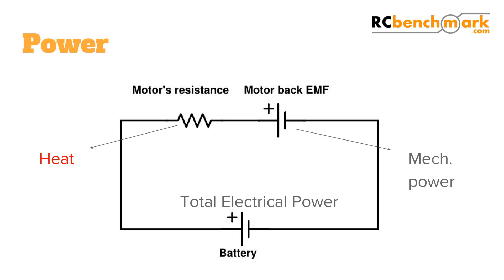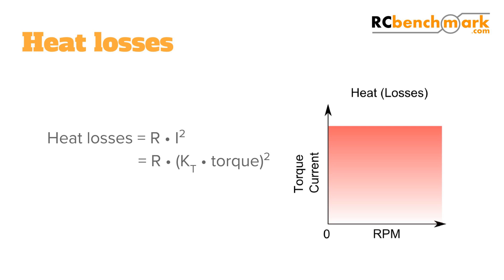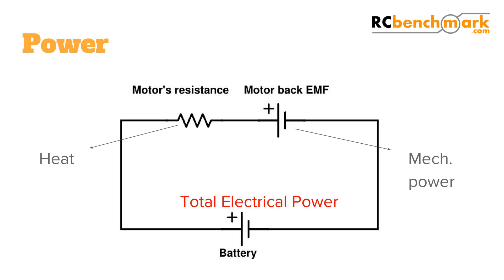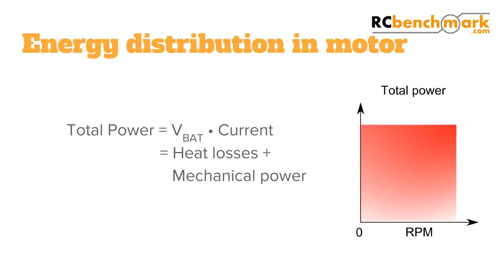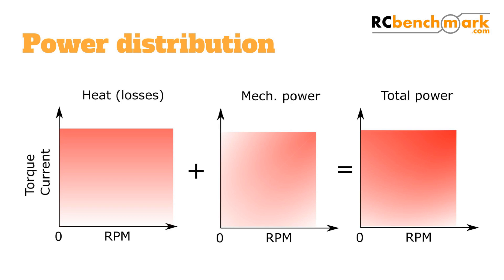The heat losses are proportional to the square of the current going through the motor. Remember that the current is also proportional to the torque. For a given motor, if the torque increases, the current increases. The total electrical power used by the battery is easy to measure — it is the battery voltage times the current. The total energy used by the motor is the sum of the electrical losses and the mechanical output. The power distribution looks like this: on the left, you have the heat losses proportional to the square of the torque only; in the center, you see the mechanical power; and on the right, you see the sum of the heat losses and the mechanical power, which is the total power used.